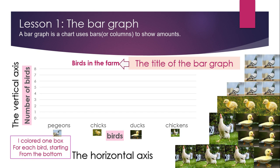In the horizontal axis هنحط عليها types of birds. In the vertical axis هنضغط number of birds. يبقى كل مرة إحنا هنشوف how many — مثلا كم عدد الحيوان اللي عندنا وهنحط كبار. The title of the bird graph هو birds in the farm. يعني في المزرعة. The vertical axis هنضغط علي number of birds، اللي هي الamount.